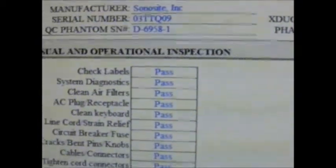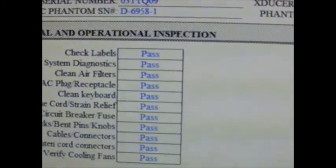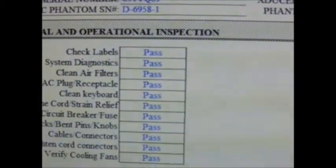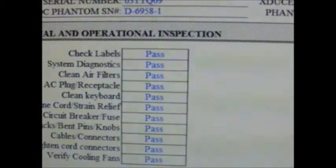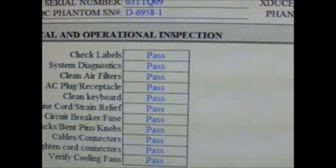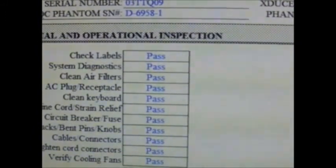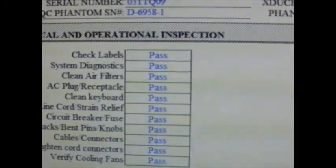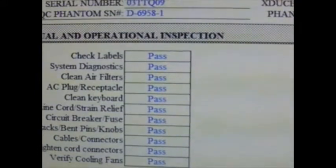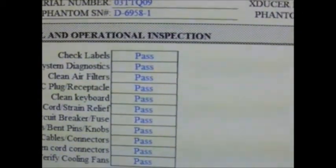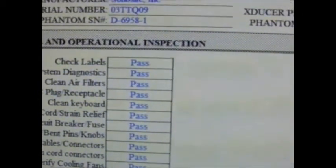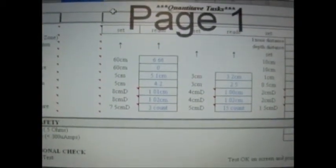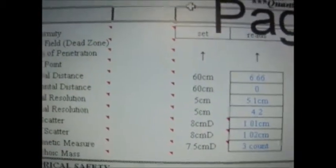Moving along, here are some visual and operational inspections. We will check the labels, check the system diagnostics, clean any filters or check the AC plug receptacles, the circuit breakers or fuses, any cracks or bent pins, check the fans. We will test the quality tests, beginning with uniformity.